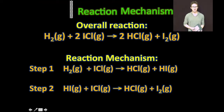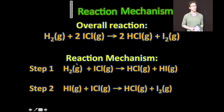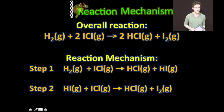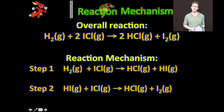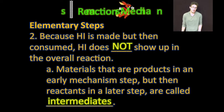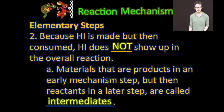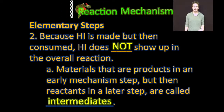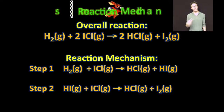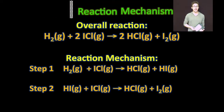As you look at this overall reaction, a hydrogen reacts with two molecules of ICl to form two molecules of HCl and a molecule of iodine. However, the reaction more likely occurs in two elementary steps. One molecule of hydrogen reacts with one molecule of ICl to form one molecule of HCl and one molecule of HI. That molecule of HI then reacts with a second molecule of ICl, forming a second molecule of HCl and a molecule of iodine. Because HI is made but then consumed, HI doesn't show up in the overall reaction. Materials that are produced in an early mechanism step but then consumed in a later step are called intermediates. HI is produced in an earlier step and consumed in a later step — that is the intermediate definition.